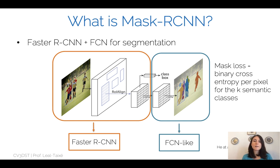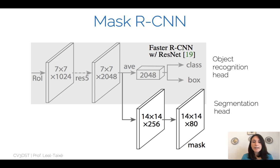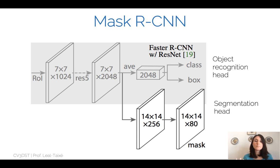The instance problem has already been solved by Faster R-CNN, which gives us separation between objects, so the mask head can focus entirely on finding the semantic class of each instance. The mask head is a series of convolutions — a fully convolutional network. You take the feature representation that still contains spatial information, from before the classification and bounding box regression heads of Faster R-CNN, and perform a series of convolutions until you have an output representing the semantic classes.